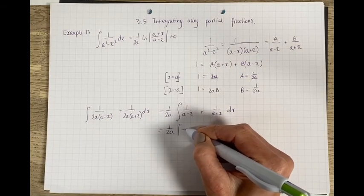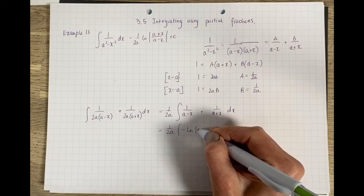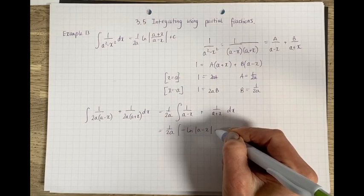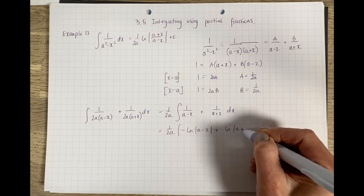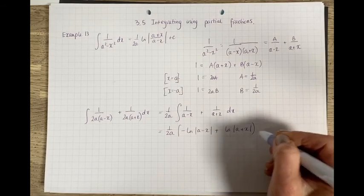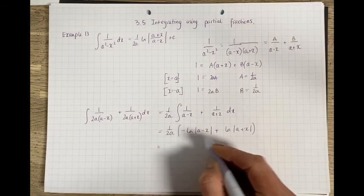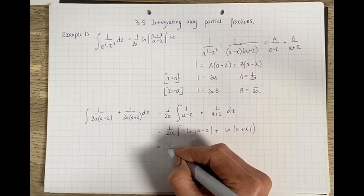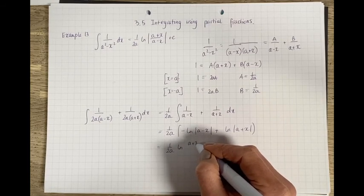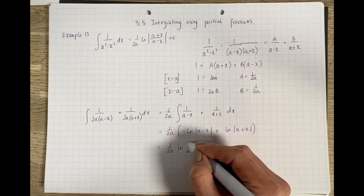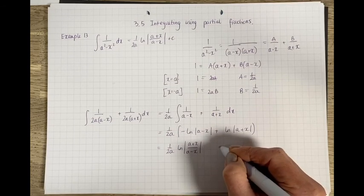This gives us 1 over 2a, and over here we are going to have minus ln(a minus x), and this plus ln(a plus x). Combining the two logs together, you have ln of (a plus x) over (a minus x) plus c.